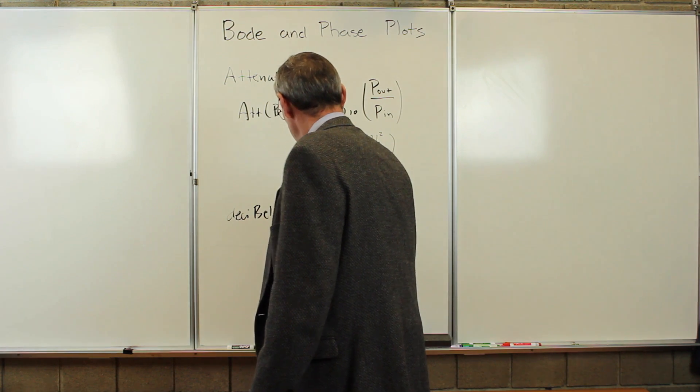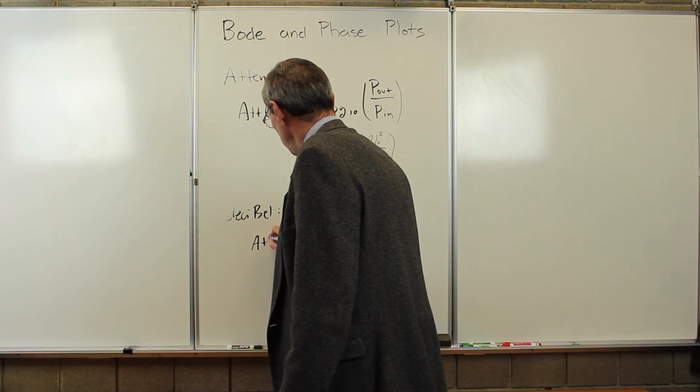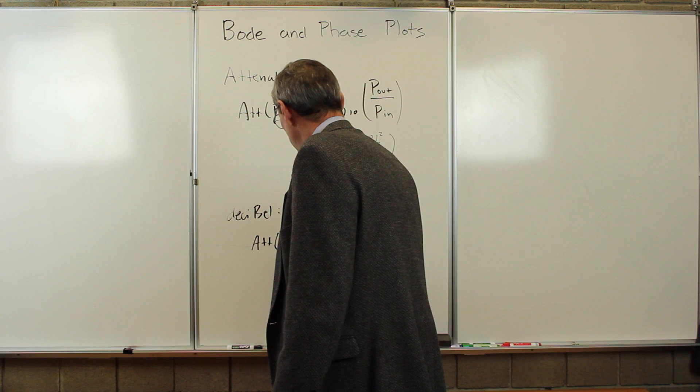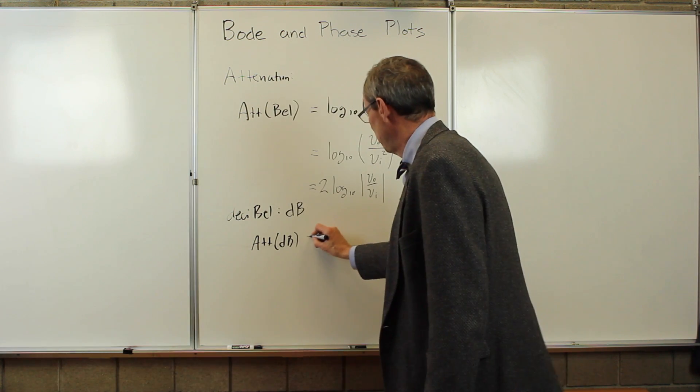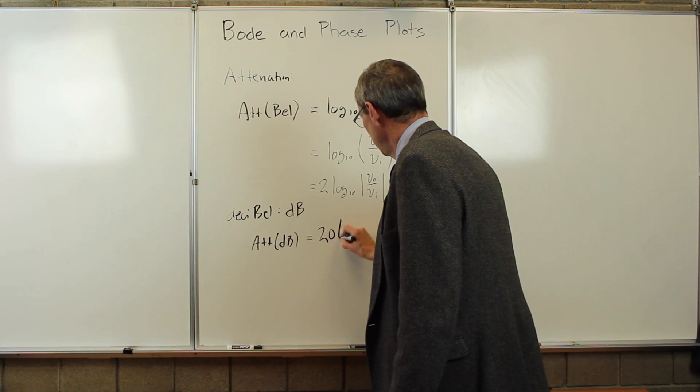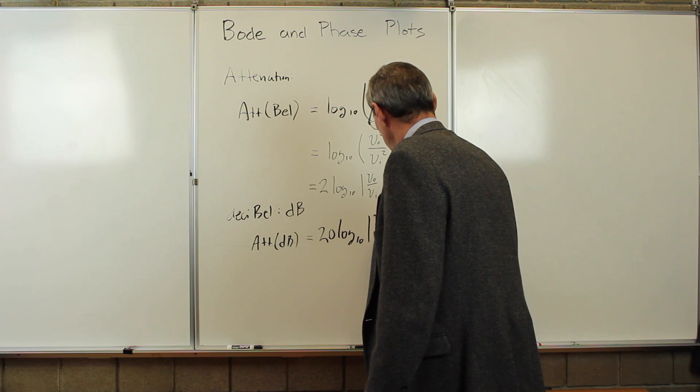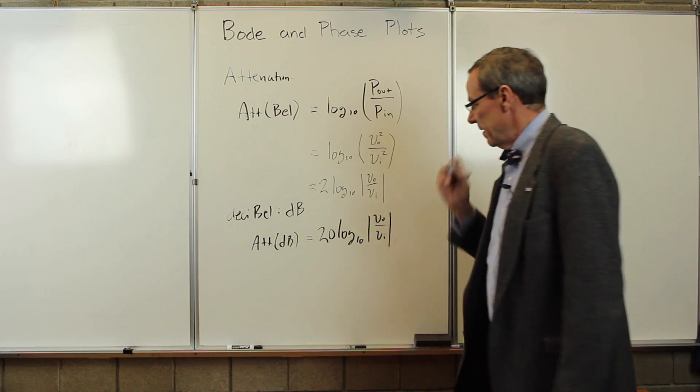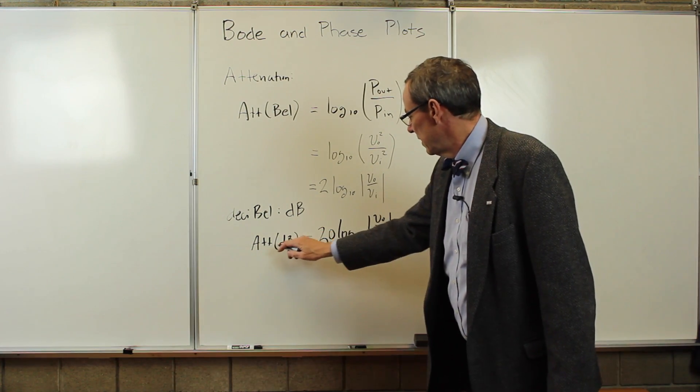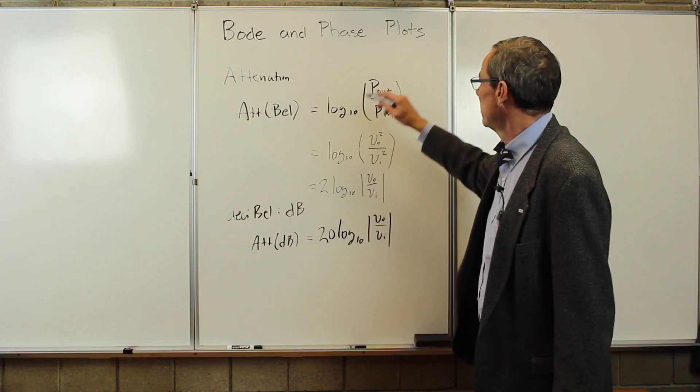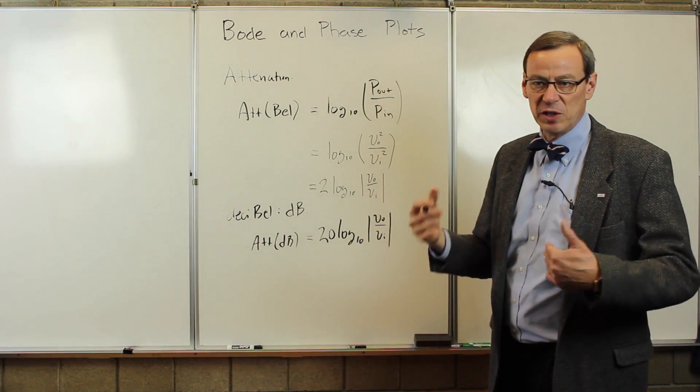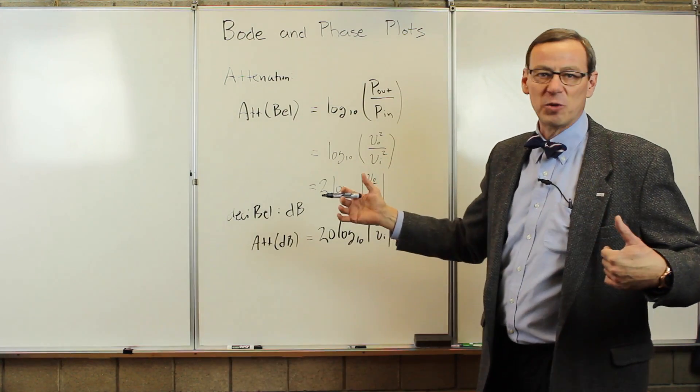The units are dB. So the attenuation in decibels is going to be ten times this. So it's twenty log base ten of v_out over v_in. And a Bode plot is the attenuation in decibels plotted against the frequency, where the frequency is expressed on a logarithmic scale.